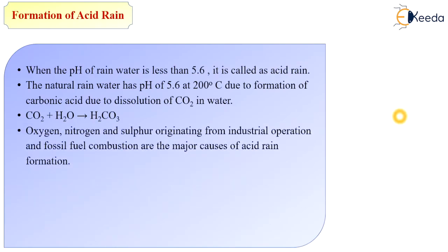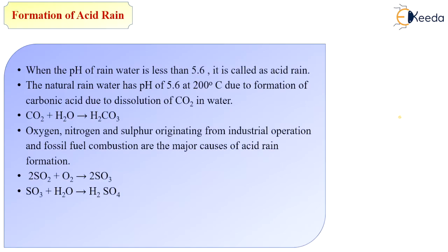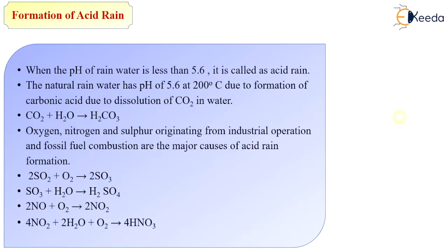Oxygen, nitrogen, and sulfur originating from industrial operations and fossil fuel combustion are the major causes of acid rain. Sulfur dioxide reacts with oxygen present in the atmosphere to form sulfate, and sulfate then reacts with water droplets to form sulfuric acid. Similarly, oxides of nitrogen react with O2 molecules to form NO2, which reacts with water droplets (H2O) to form nitric acid.